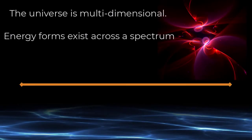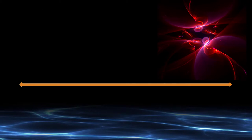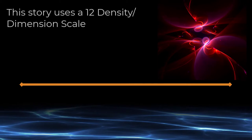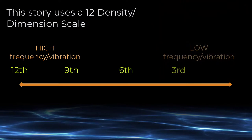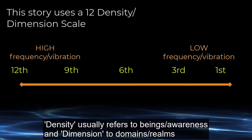The Universe is multidimensional. Energy forms exist across a spectrum. This story uses a 12-density dimension scale, from high frequency 12th density to low frequency 1st density. Density usually refers to beings or awareness, and dimension to domains or realms.